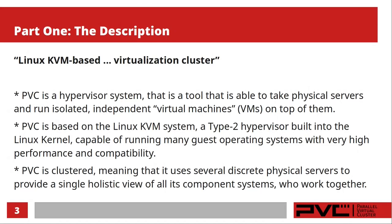PVC is a Linux KVM-based virtualization cluster. PVC is a hypervisor system — a tool that's able to take some set of physical servers and run isolated and independent virtual machines on top of them. A virtual machine is like a virtual computer running on top of that hardware, allowing you to run multiple VMs on one physical machine, sharing resources and running isolated guest operating systems. PVC is based on the Linux KVM system, which is a type 2 hypervisor built into the Linux kernel — one of the most flexible options, capable of running many guest operating systems with very high performance and high compatibility.